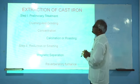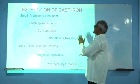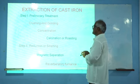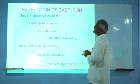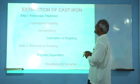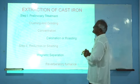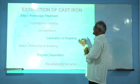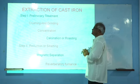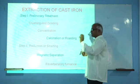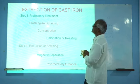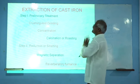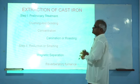Extraction is the most important step. The technique involves: first, preliminary treatment; second step is reduction, also known as smelting. In the preliminary treatment, the steps are: first, crushing and grinding; second, concentration; and third, calcination, also known as roasting. The hematite rock with near about 80% iron can be preliminarily treated for extraction of cast iron by first crushing, also known as grinding.